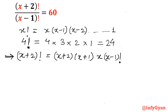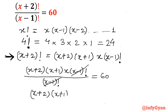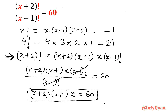Now put this expanded value of (x+2)! into the given equation. The equation will become (x+2)(x+1)(x)(x-1)! divided by (x-1)! equals 60. You can easily see that (x-1)! in the numerator and denominator will get cancelled out. So what is left is the cubic equation: (x+2)(x+1)(x) = 60.